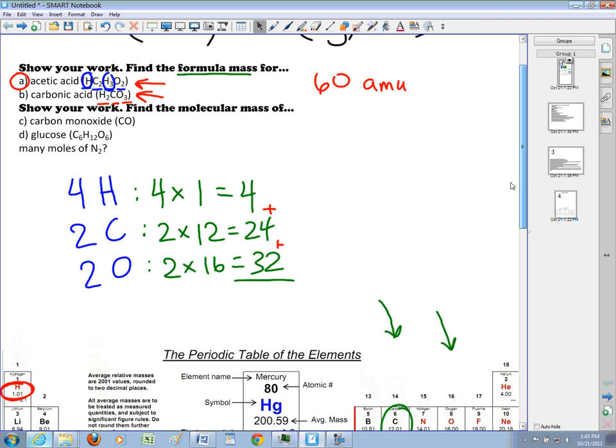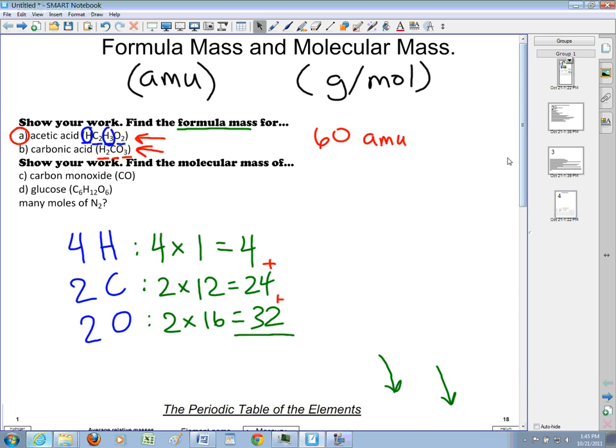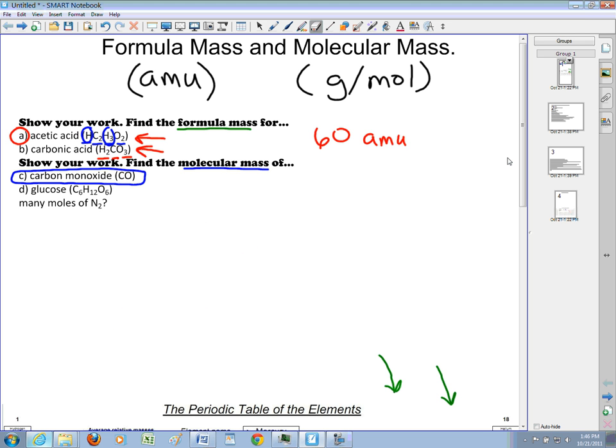Molecular mass is done almost exactly the same way. We'll take a look at the first one here, carbon monoxide. When you're finding the molecular mass, you do it exactly the same way as we just did for acetic acid. It's just now our units are different - our units are going to be in grams per mole.